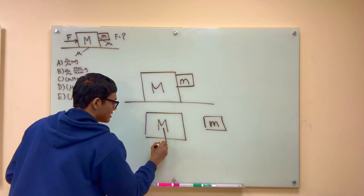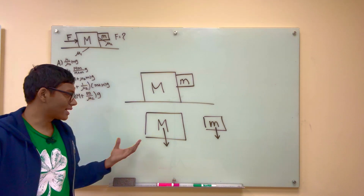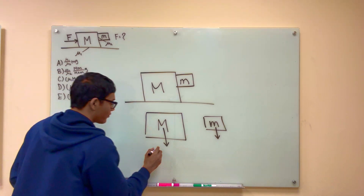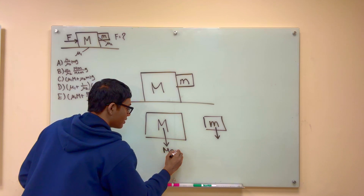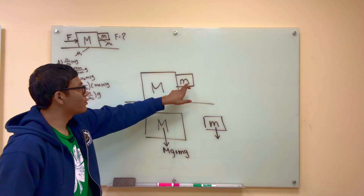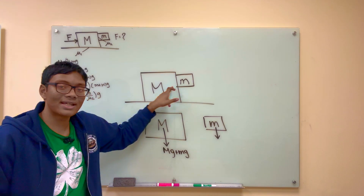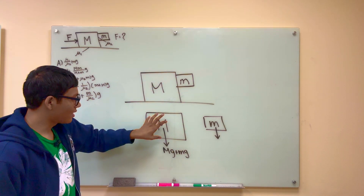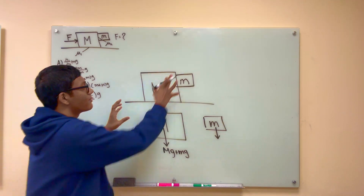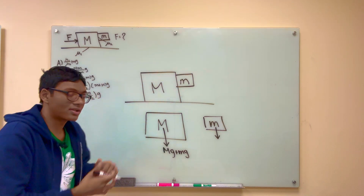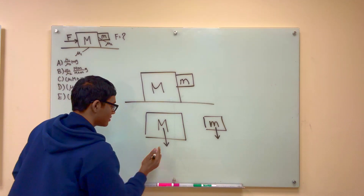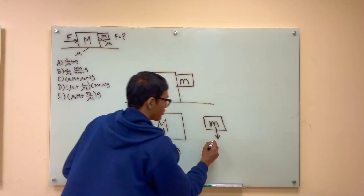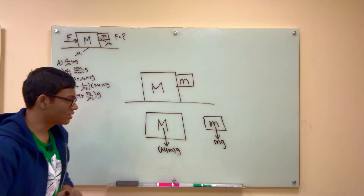Both of these masses have gravity acting down on them — everything has gravity acting down in a gravitational field. For the big mass, the gravitational force won't just be capital Mg. It will be capital Mg plus lowercase mg, because we are assuming that these two boxes stay together. If they stay together, the weight of the big box includes the smaller box as well. So I'll factor out g and write the total weight as (M + m)g. For the smaller box, its weight is just mg.